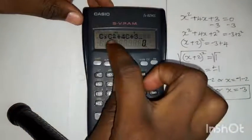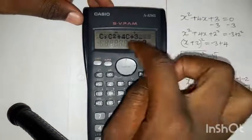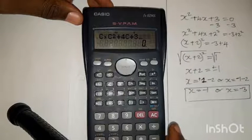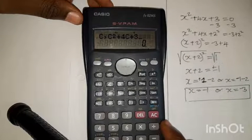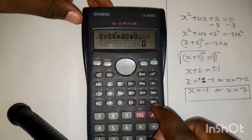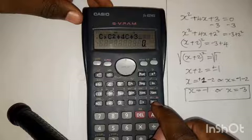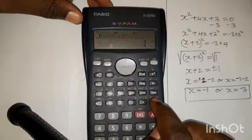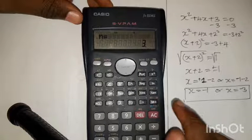Now after you've done this, this is now your quadratic equation. After you've done this, you press this memory plus of the calculator, M plus, four times. So you press it 1, 2, 3, 4.